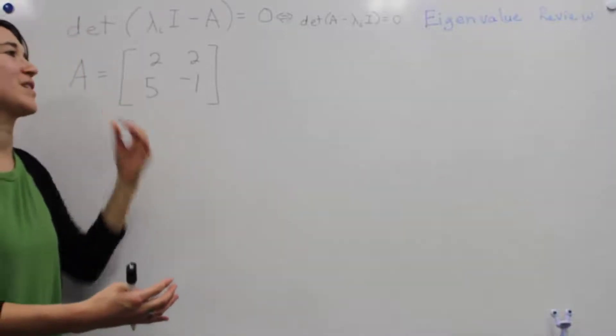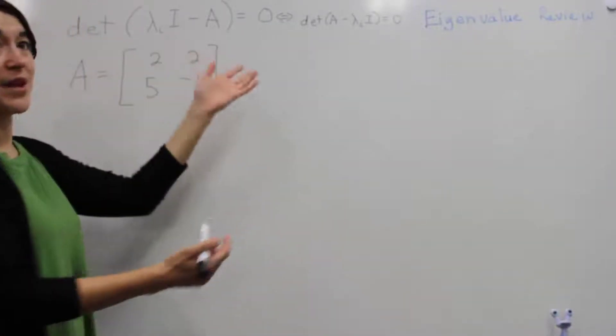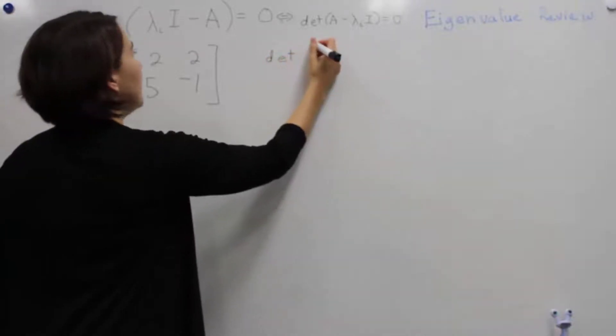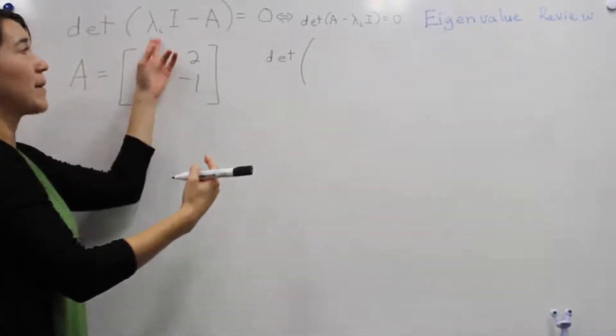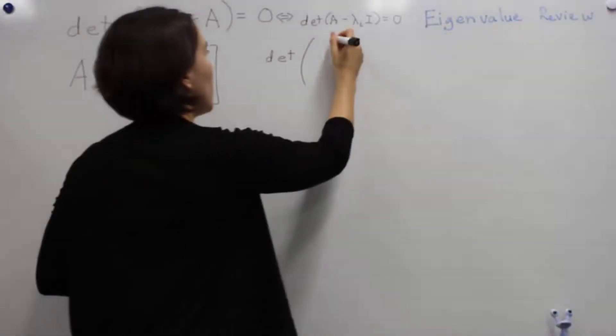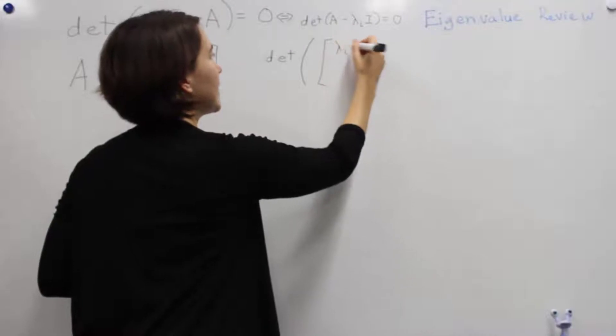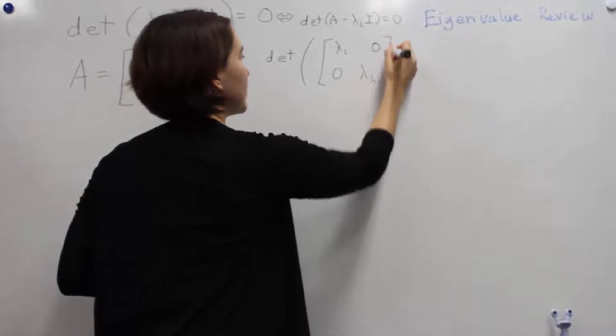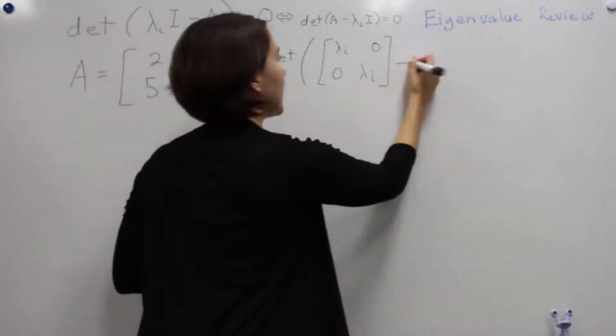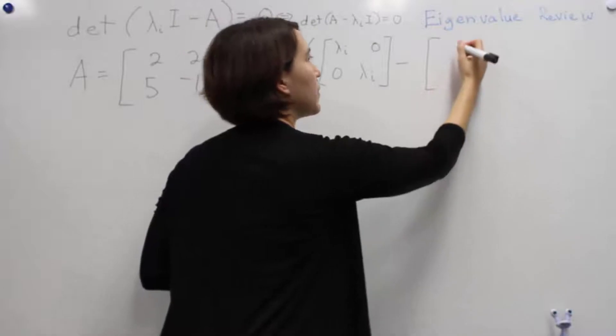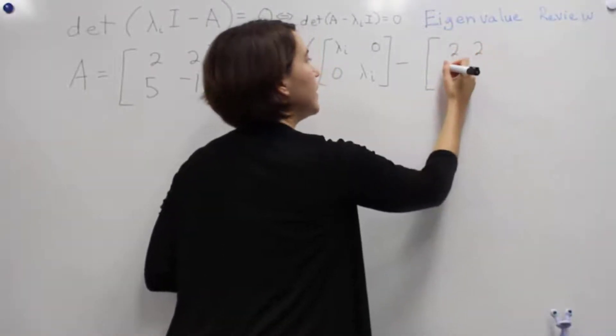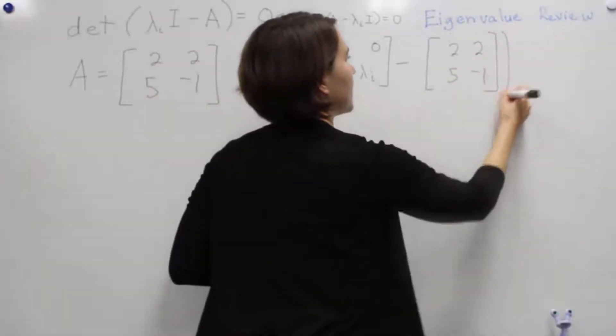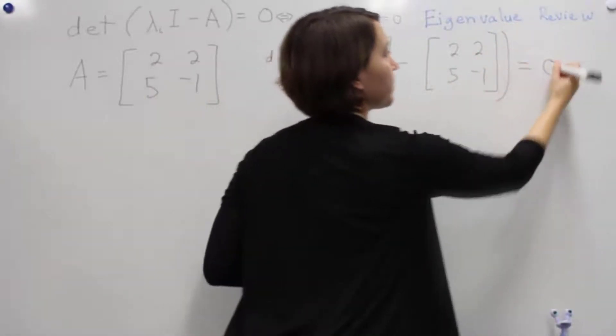Now let's try to find the eigenvalues for this matrix. We plug it into our formula, so we need to determine it. Now we're going to do lambda times the identity, so we'll have lambda here, 0, 0, lambda here. The first part, we'll subtract A, and we do [[2, 2], [5, -1]]. This all equals zero.